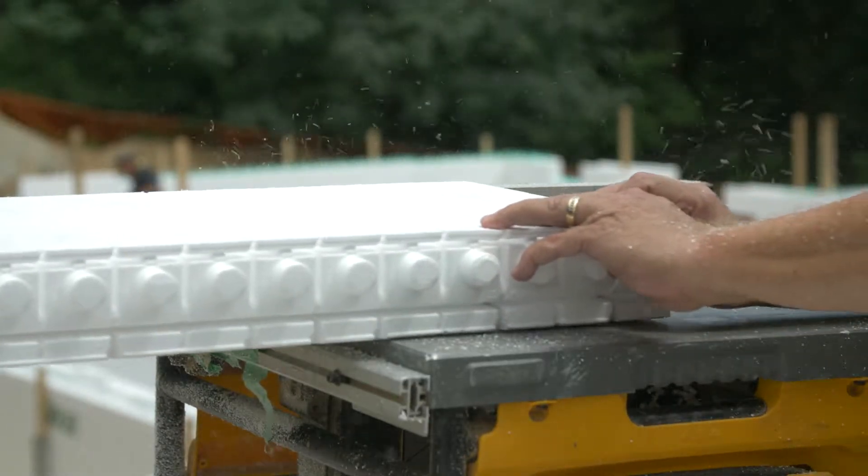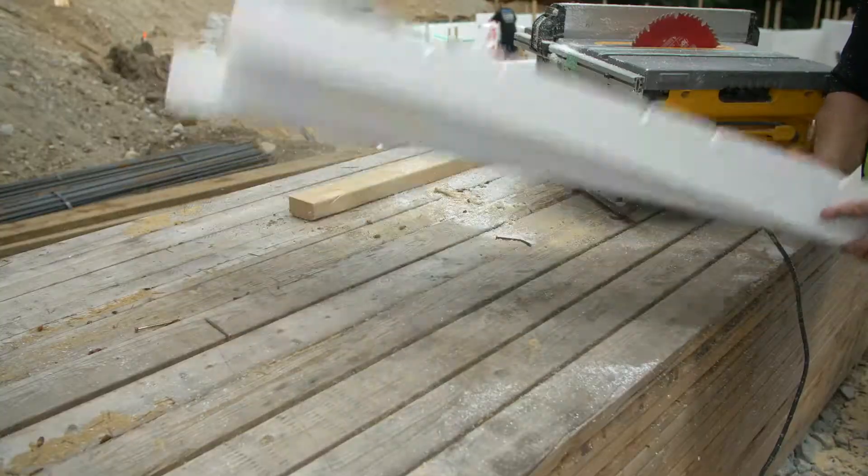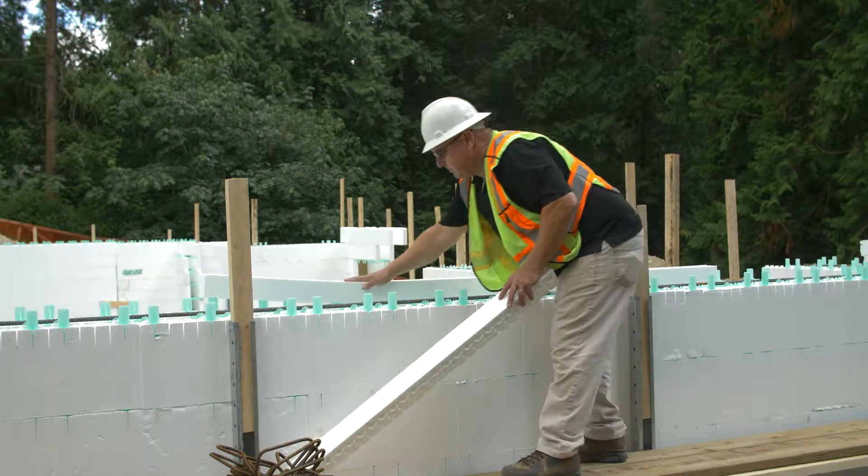Ripped panels less than four inches high will support themselves on tie flanges and can be poured as is.